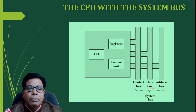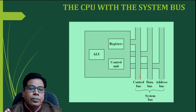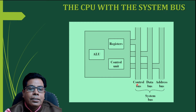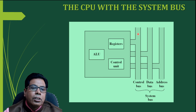The processor has a control bus, data bus, and address bus connected to it. Together, these are called the system bus. The address bus carries the address, the data bus carries the data, and the control bus carries the control signals. In this way, these three buses control the flow of data, and the processor performs different operations on the data.